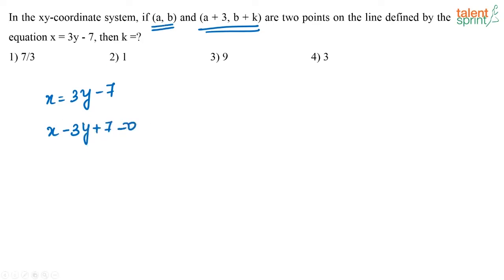If I put x as a and y as b, the answer that I get will be equal to 0. So I will get a minus 3b plus 7 that is equal to 0.